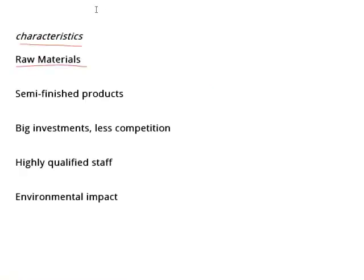Before we leave this section, let's briefly revisit the characteristics. First, raw materials: the majority of these industries are characterized by working from different raw materials in the initial phases. Second, semi-finished products: basic industries are in charge of producing semi-finished products so that other industries can use them for manufacturing of the final products.